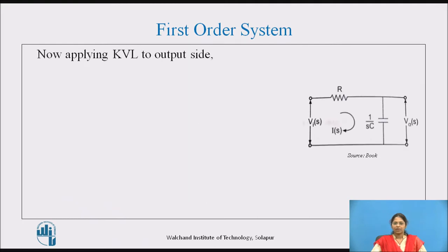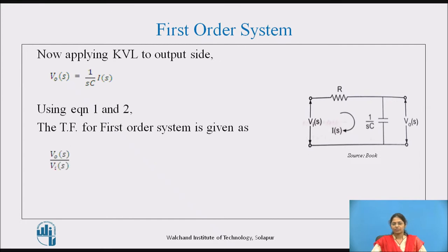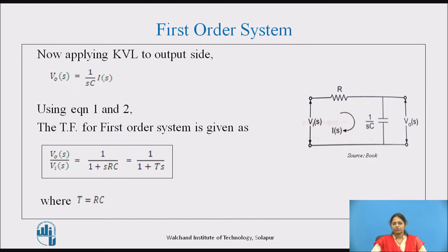Applying KVL to the output side, we get Vo(s) = (1/sC)·i(s). This is equation 2. Using equations 1 and 2, the transfer function for the first-order system is given as Vo(s)/Vi(s) = 1/(1 + sRC), which is equal to 1/(1 + Ts), where T = RC.